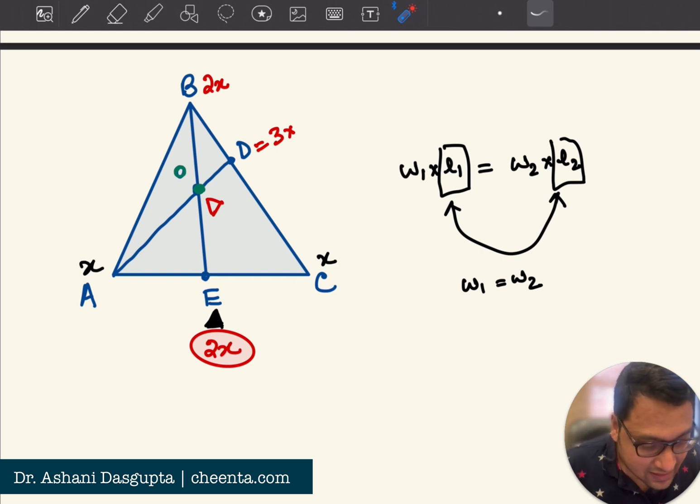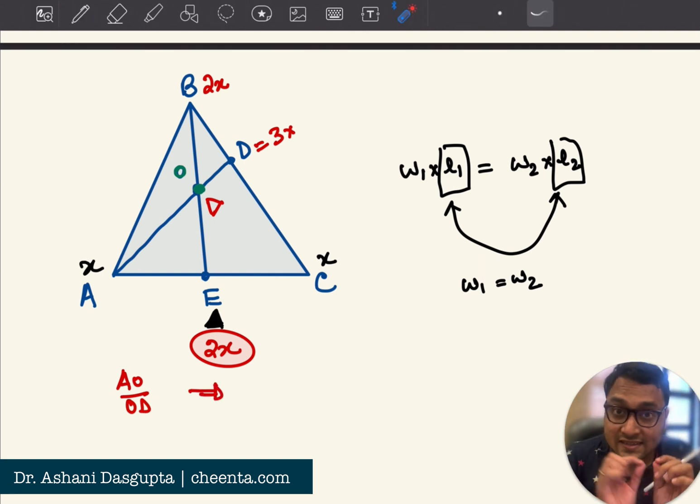So we are almost done. We have to find out the length of AO is to OD. So what do we know? We know that the entire system is balanced about O. So the principle of levers apply again. So, AO into x,